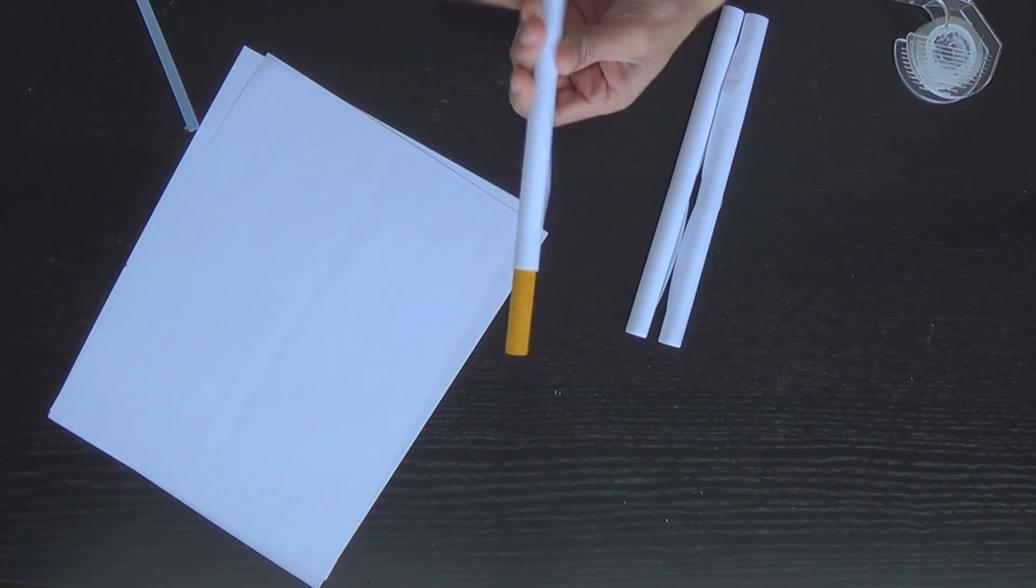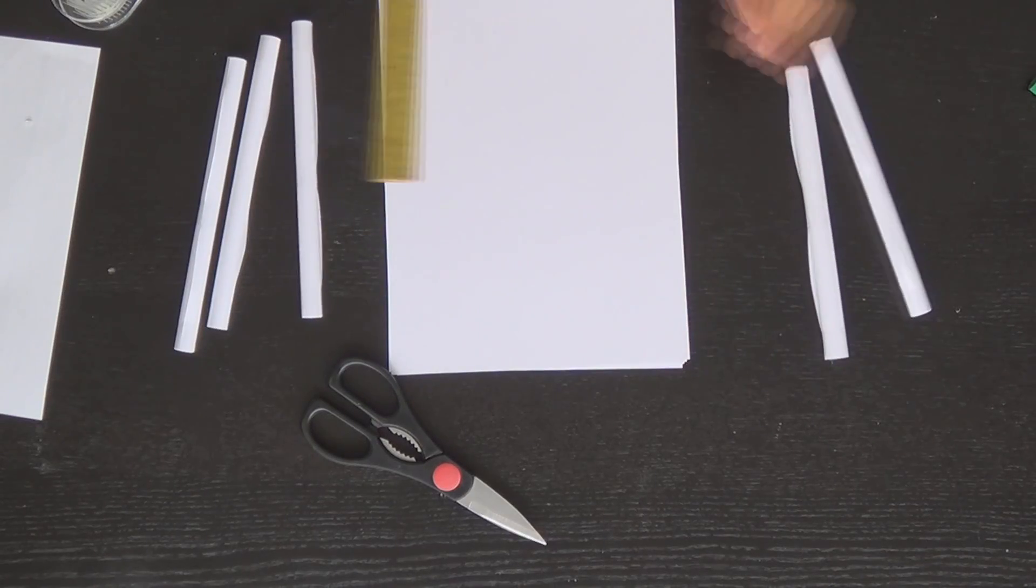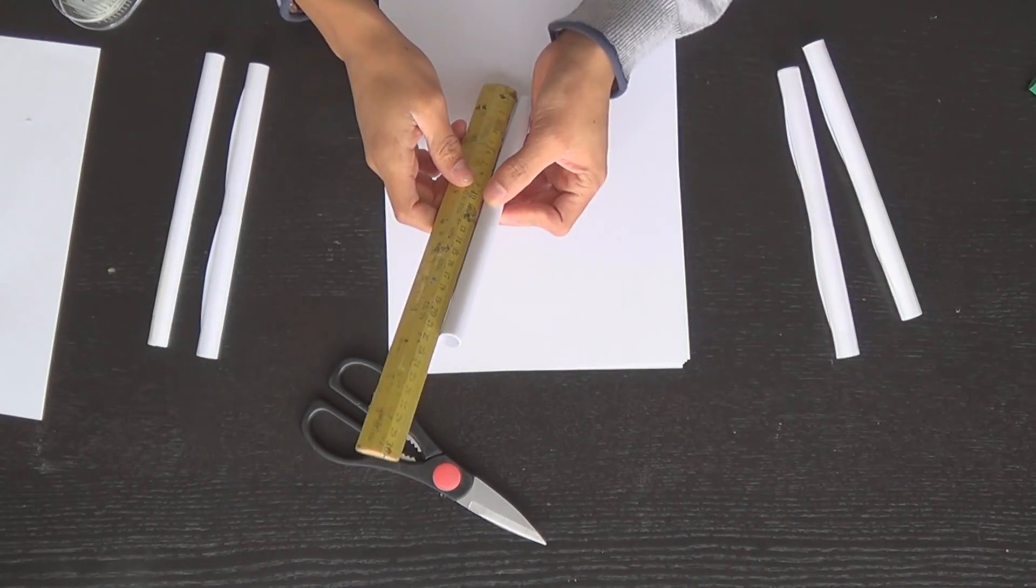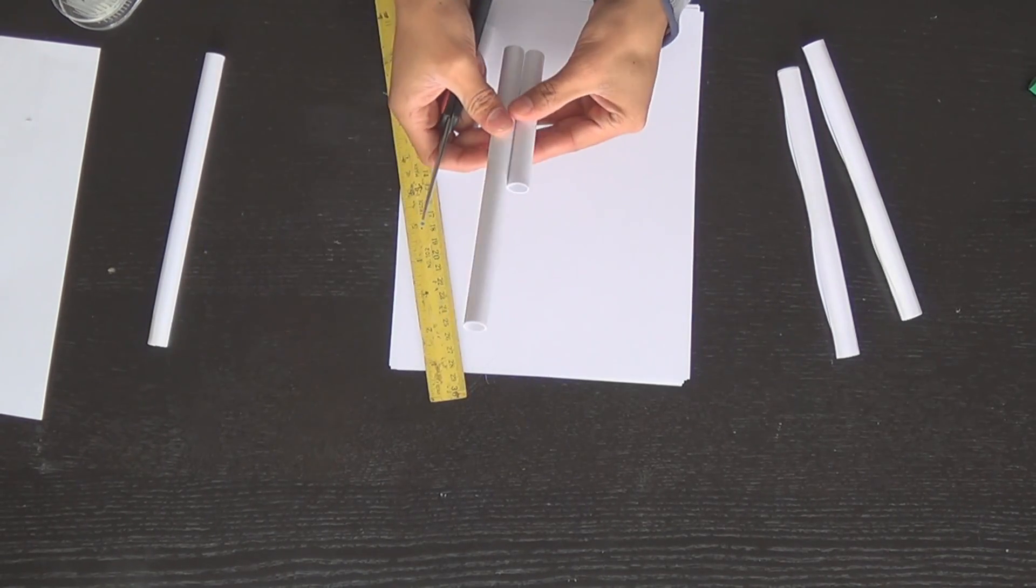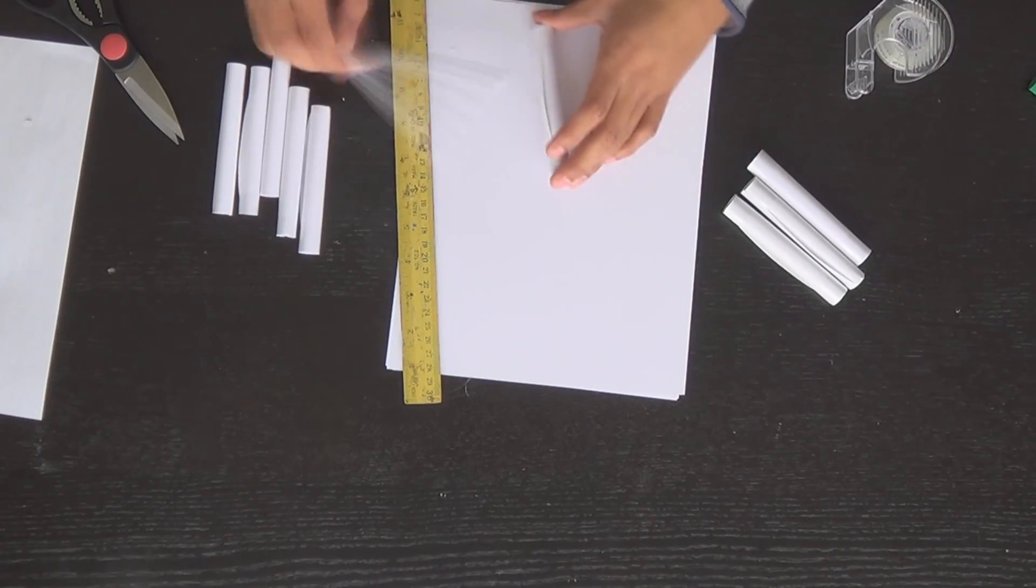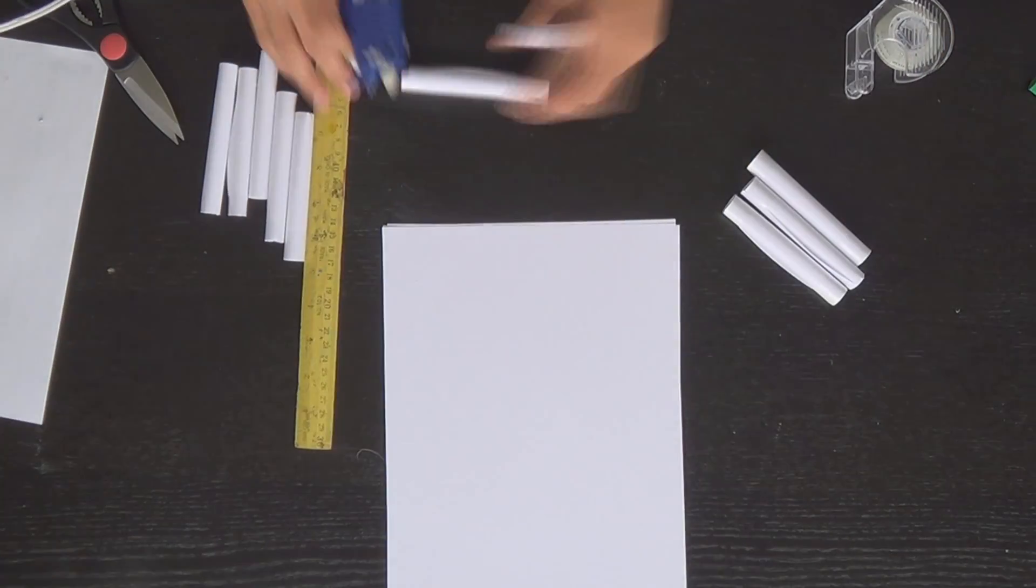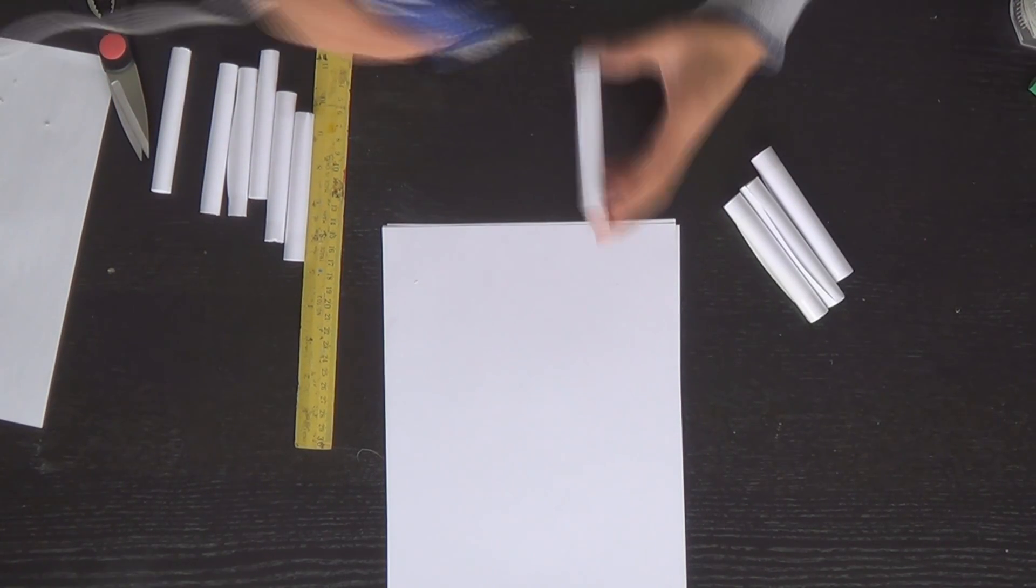Now these cylinders made out of paper will be the building blocks for our trebuchet, so we're going to have to build a bunch. I start off with five but I end up needing seven I think. So we'll start off by cutting it in half and measure it out halfway and use that to cut the rest of them in half. And with a bunch of these half pieces we're going to start out by building the base of our trebuchet.